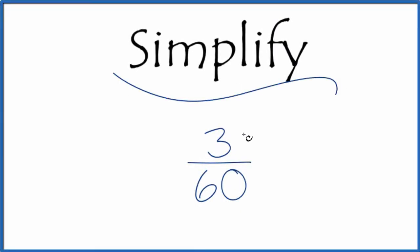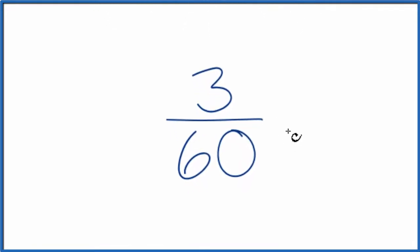If you need to simplify the fraction 3/60, here's how you do it. What we're doing is trying to find another fraction that's equal to 3 over 60, an equivalent fraction. It has the same value; we've just simplified it or reduced it to its lowest terms.